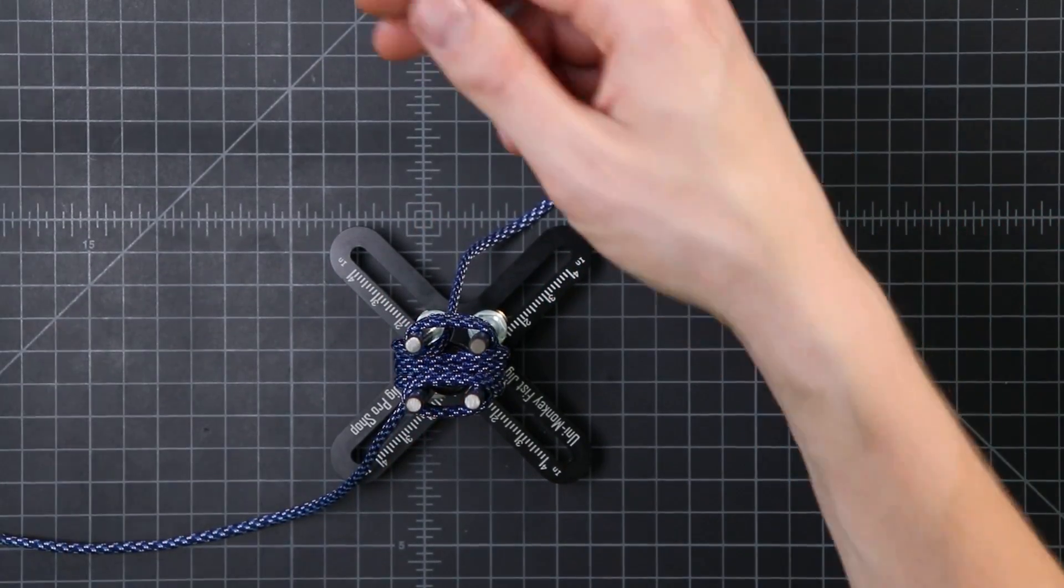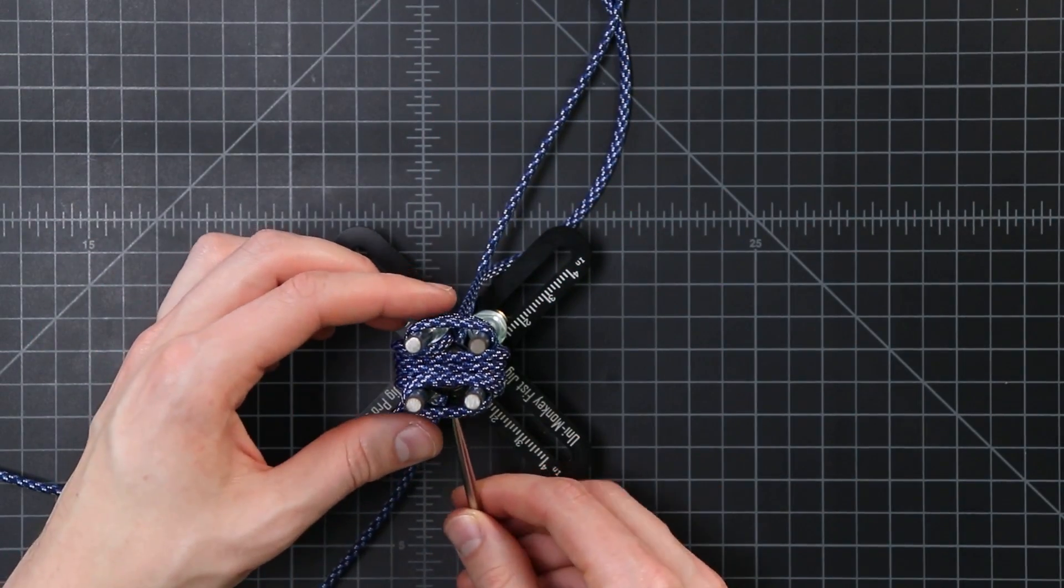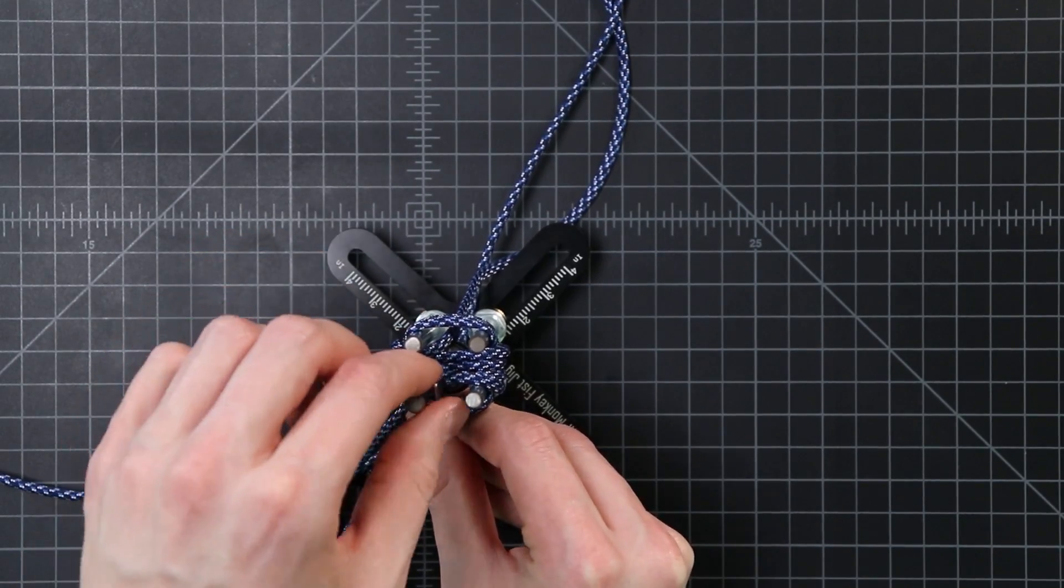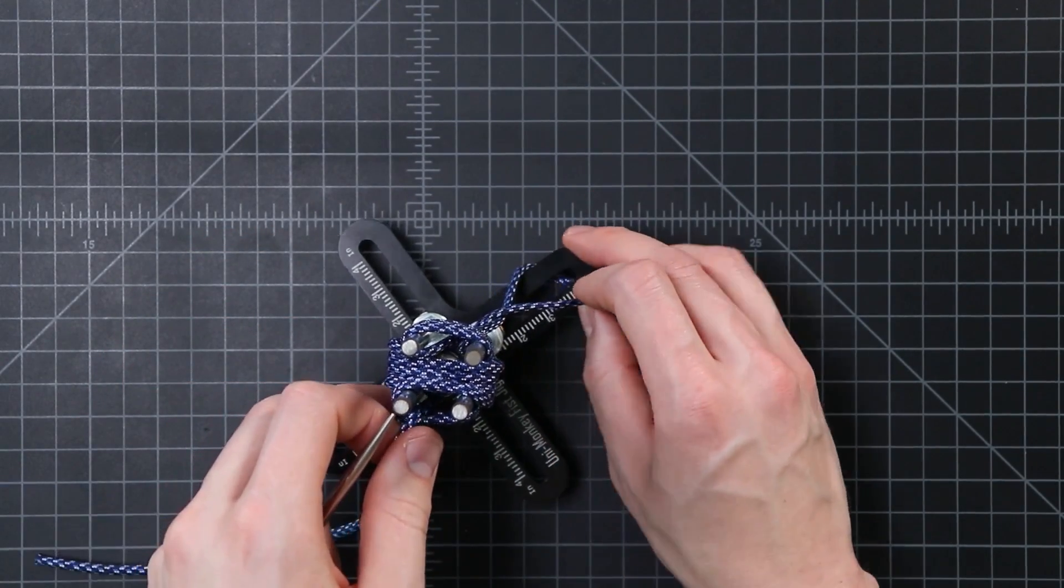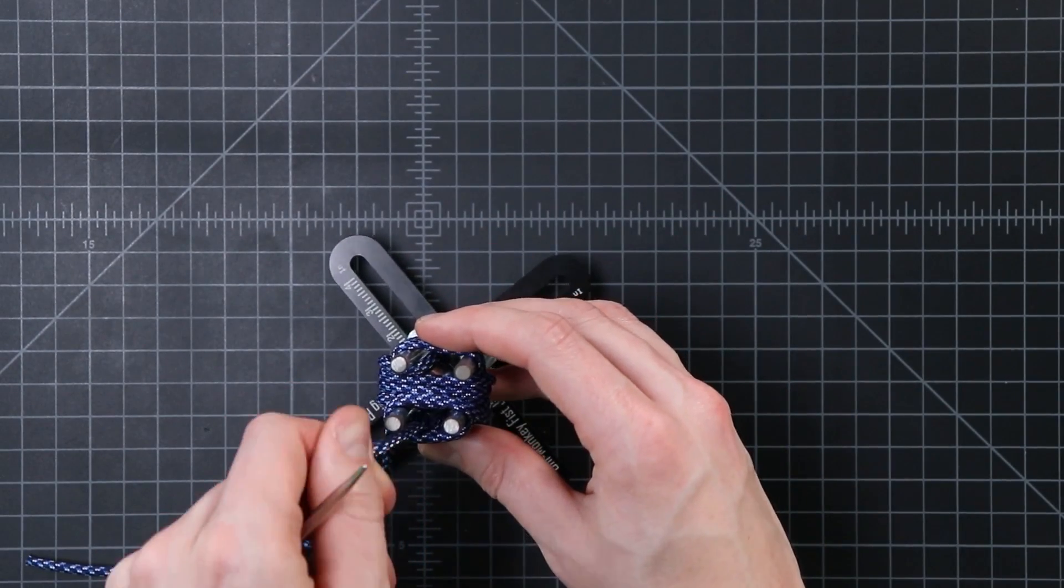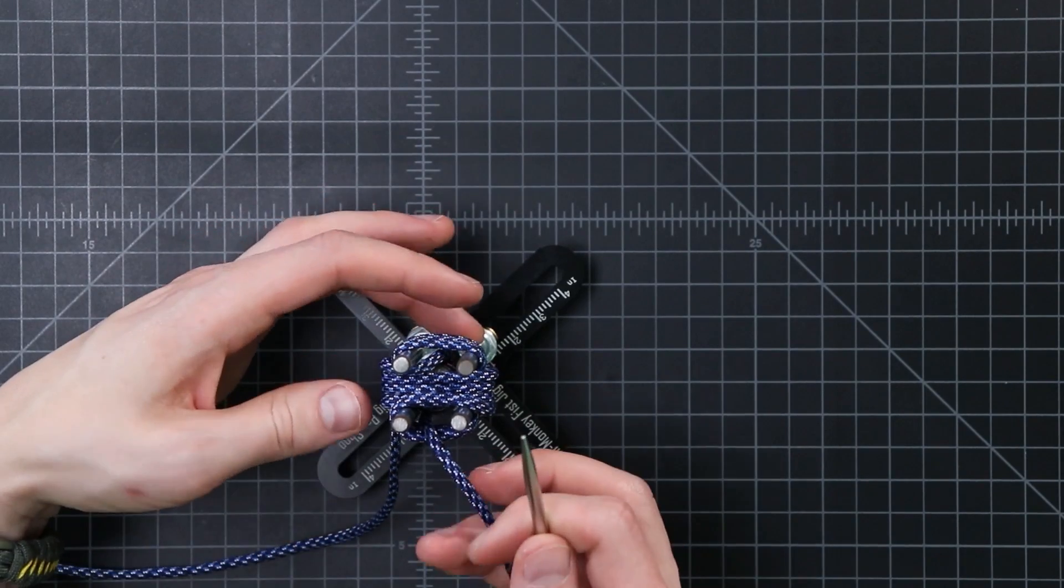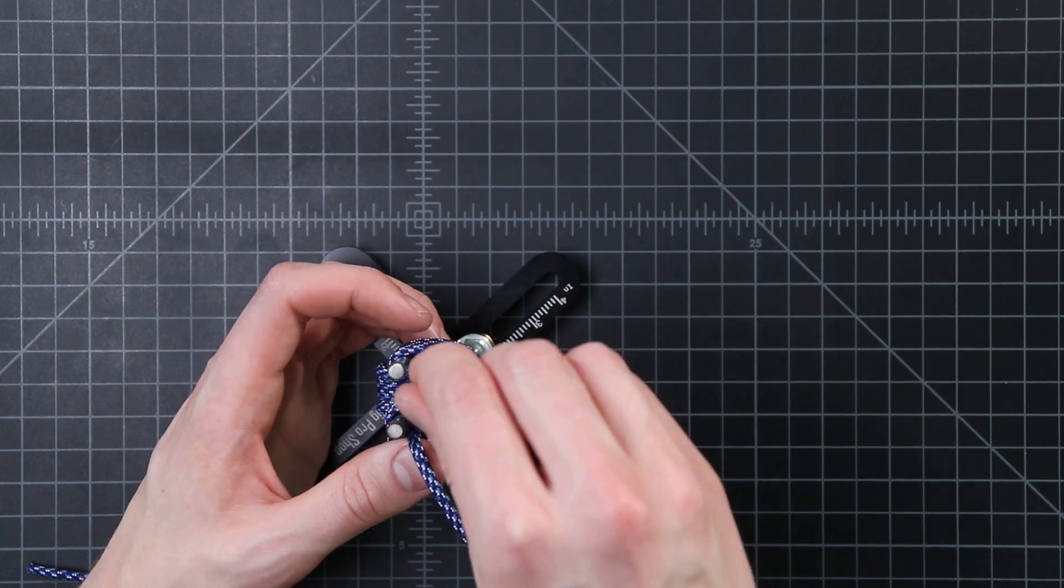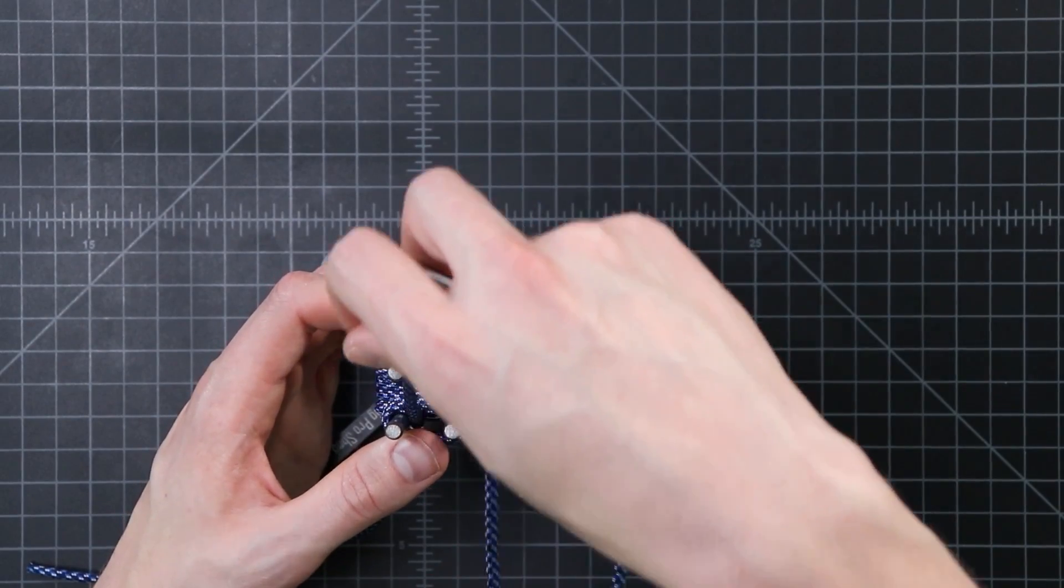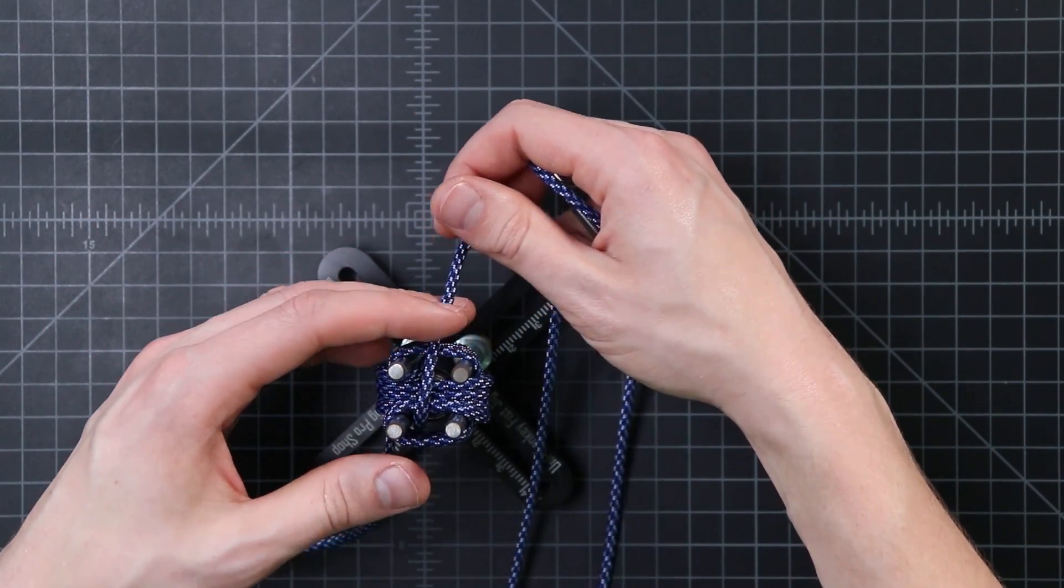And then coming across the bottom and up through that other side. Make sure to get any twists out of your cord as you're doing that. So now we've made our first wrap. So now we're just going to wrap that around a total of 4 times as well.